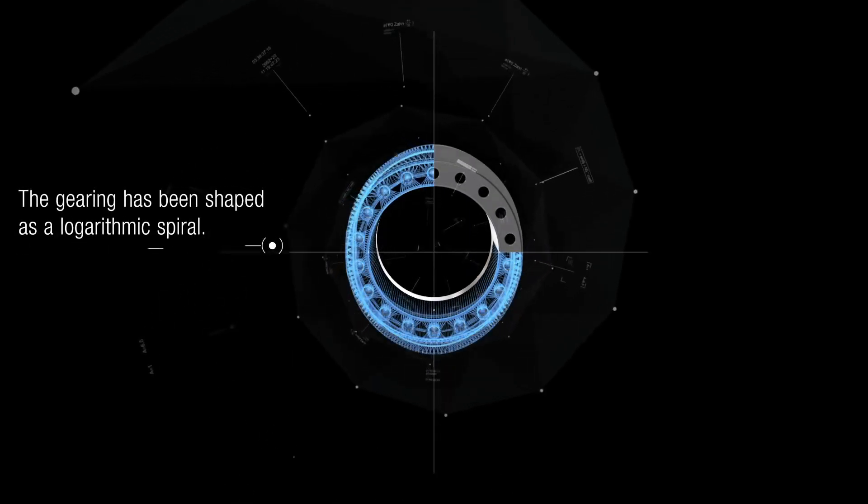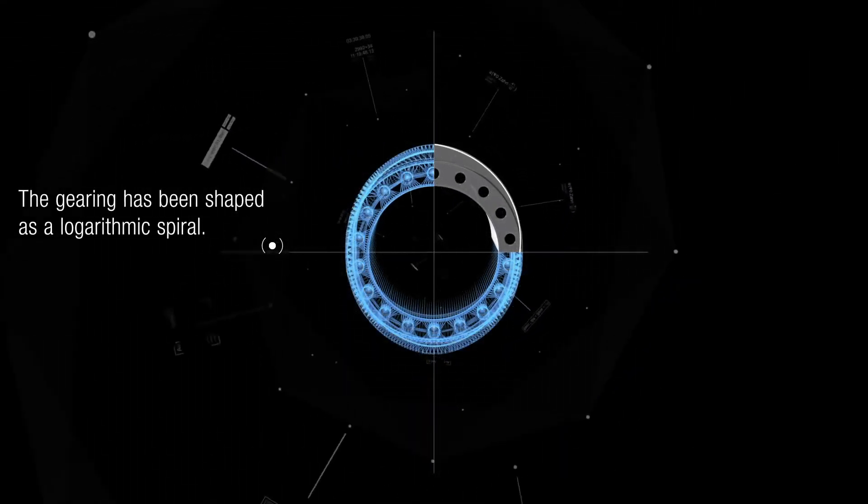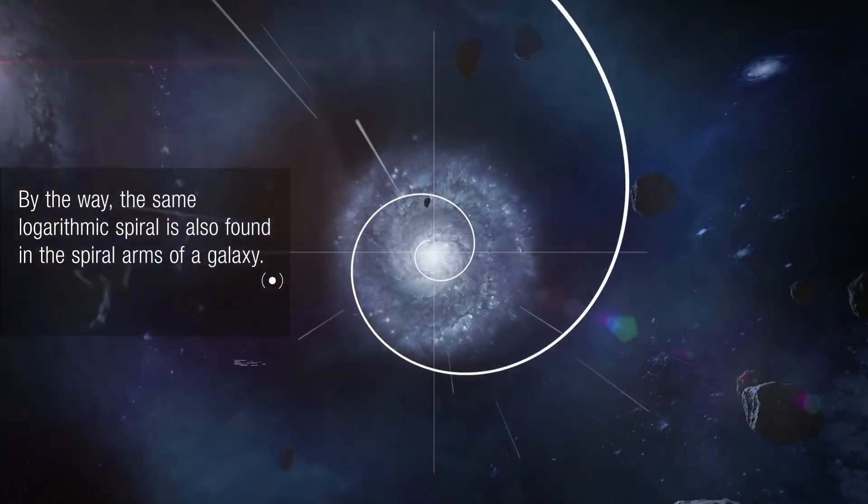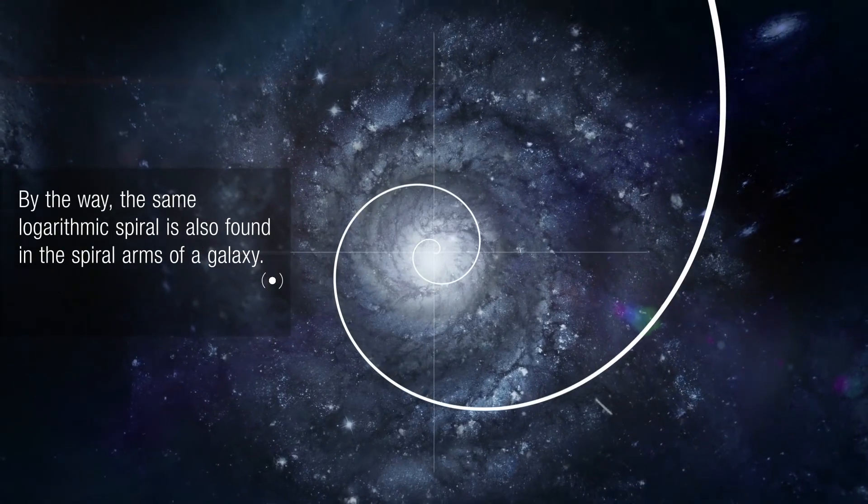The gearing has been shaped as a logarithmic spiral. By the way, the same logarithmic spiral is also found in the spiral arms of a galaxy.